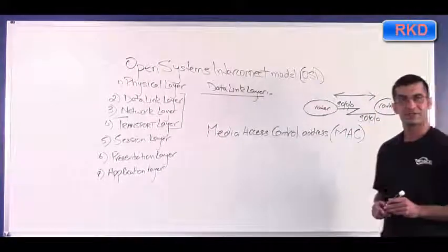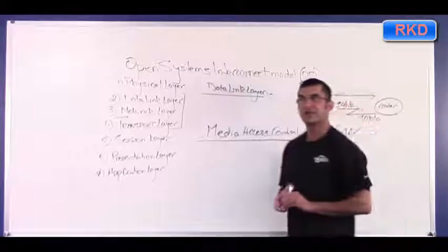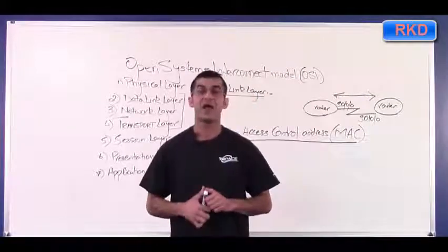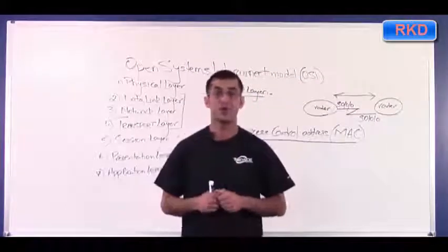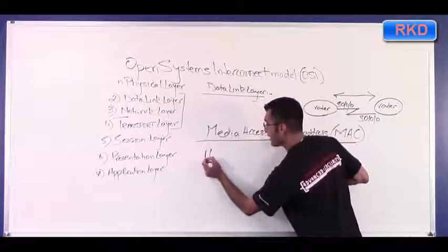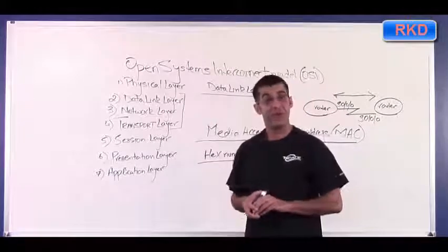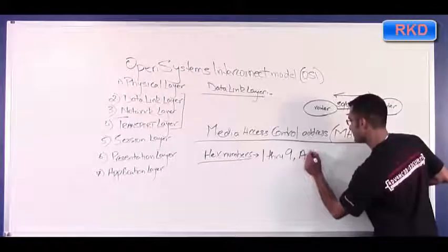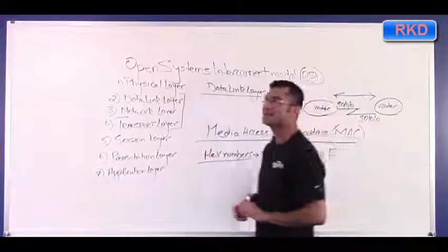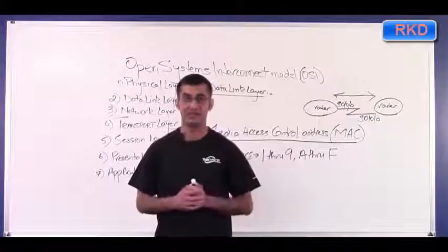Now what does a MAC address look like? A MAC address is 48 bits in length and it's written in hexadecimal. Now I'm not going to assume that people here listening to this lecture know what hexadecimal numbers are. So real quick, what are hexadecimal numbers, or in short, what are hex numbers? Hex numbers range between one and nine, and then A through F. So hex numbers go one through nine, then A through F. So if I wanted to say 10 in hexadecimal I would just say A. If I wanted to say 11 in hexadecimal I would just say B.